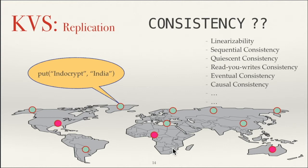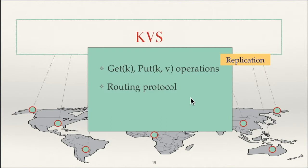In distributed systems literature, there is a whole spectrum of consistency notions — some are weak, some are strong. Strong consistency can make a write instantaneously visible on all replicas, whereas weak consistency notions might take some time to get replicas into a consistent state. If you do a read operation before consistency is reached, this operation can return different values. The set of possible values depends on the kind of consistency guarantee your key value store provides. We'll see later that this notion of consistency also has an impact on security.